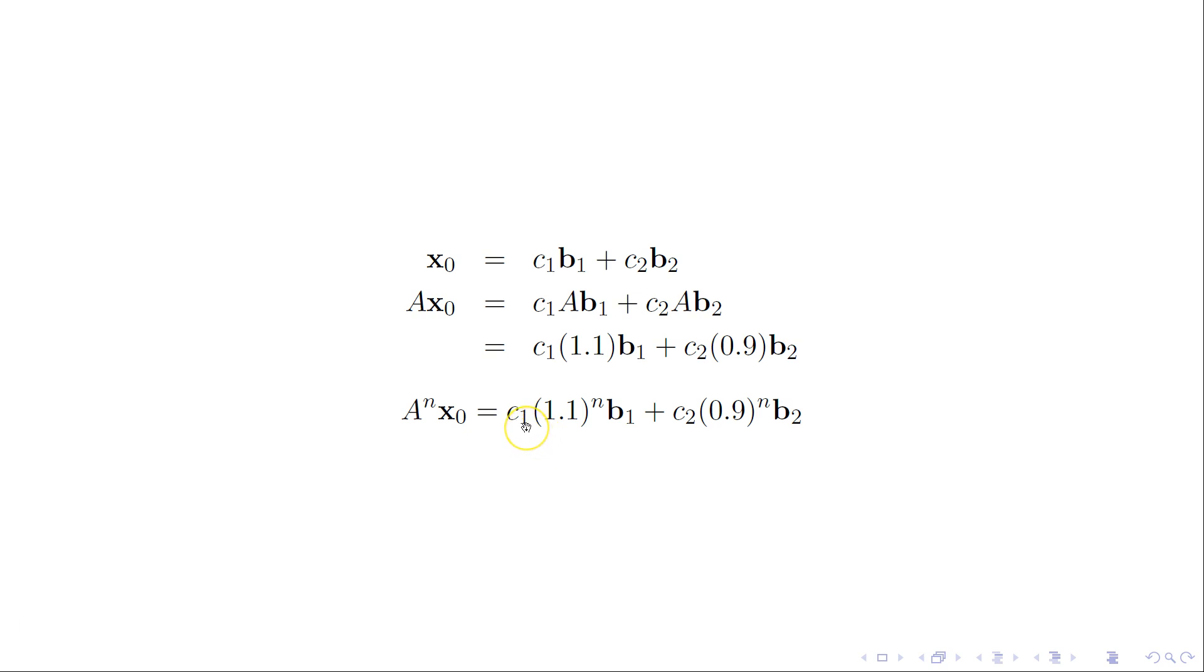But if the c1 is a negative number, which is indeed possible, even if we have positive populations, we could still have a negative coordinate based on this basis. Then what we're going to have here is a negative contribution to the population over time, and I think we'll see declining populations.